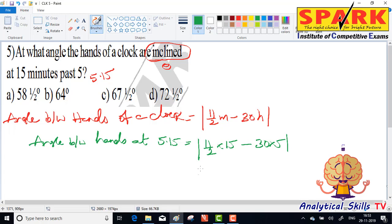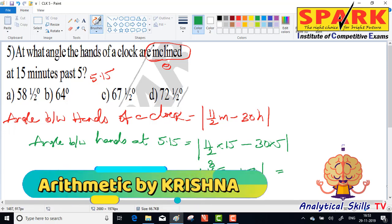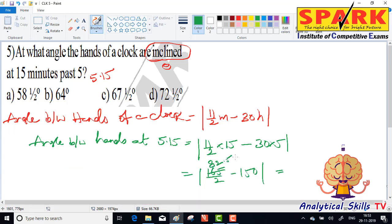11 by 2, 11 times 15 is 165 by 2 minus 150. So 165 by 2 minus 150, that's 82.5 minus 150.